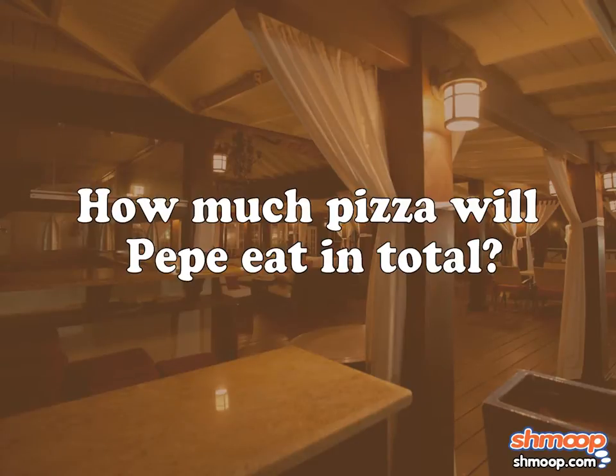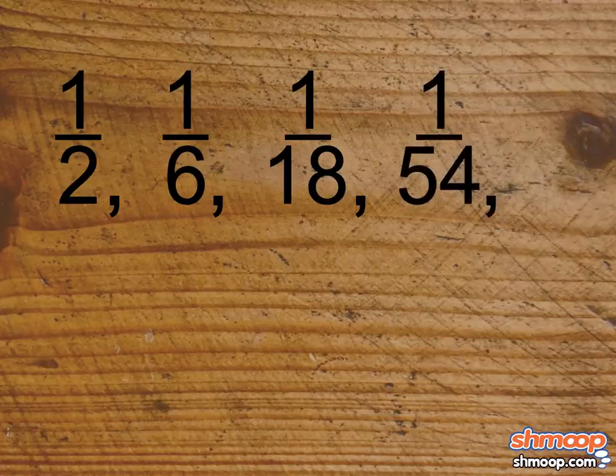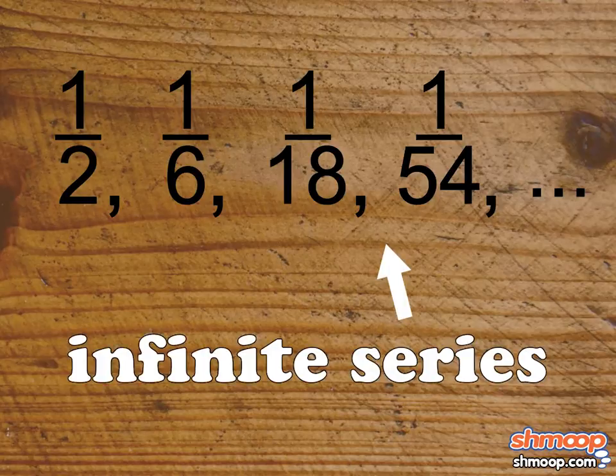Well, first let's look at the numbers we have: one-half, one-sixth, one-eighteenth, one-fifty-fourth, and so on. Looks like we have something called a series, or actually, since we're assuming he'll eat forever, an infinite series.